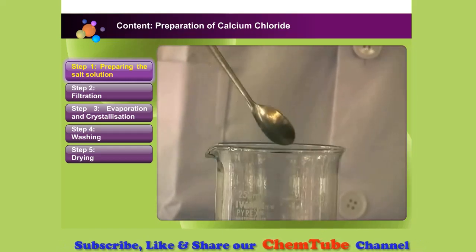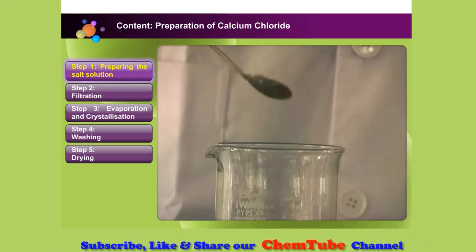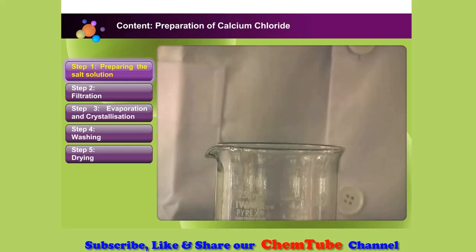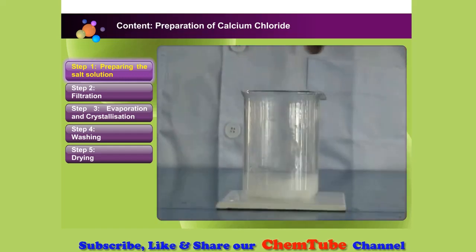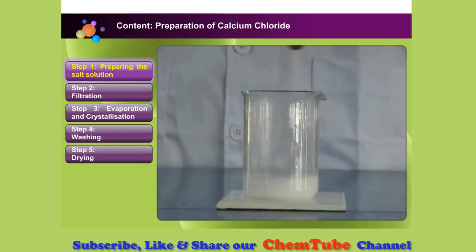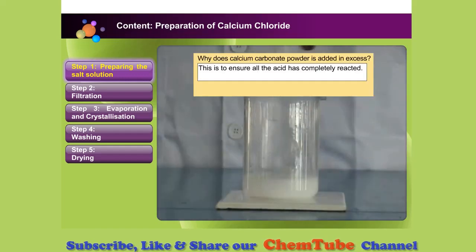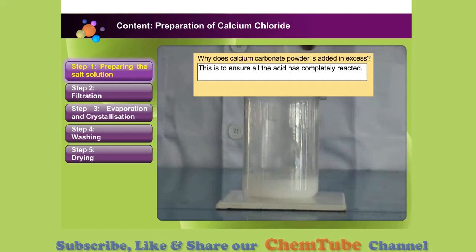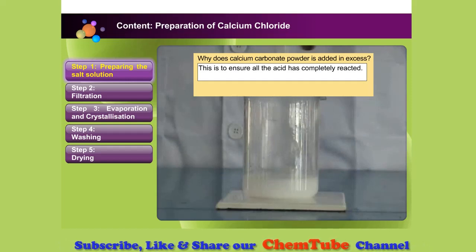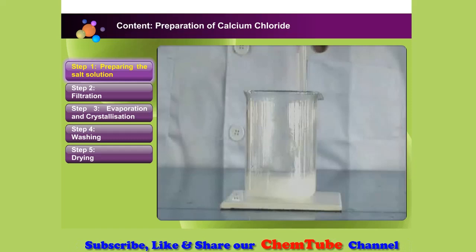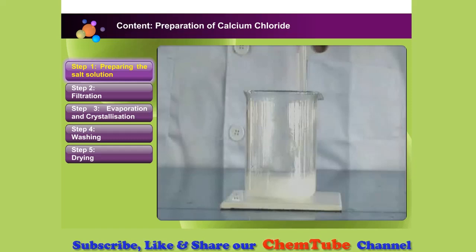Now, add in excess calcium carbonate powder and stir well. This is to ensure all the acid has completely reacted. We have now obtained the calcium chloride salt solution.